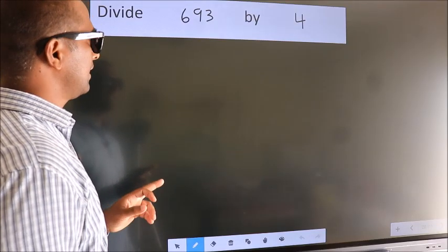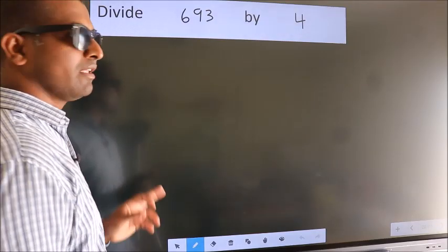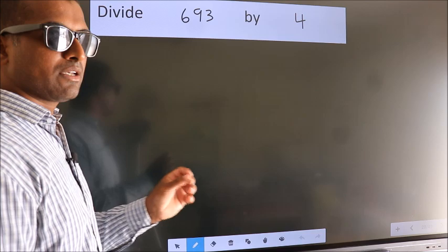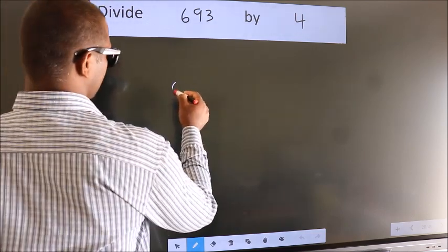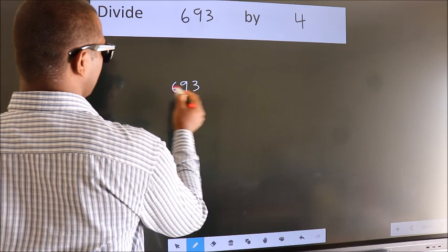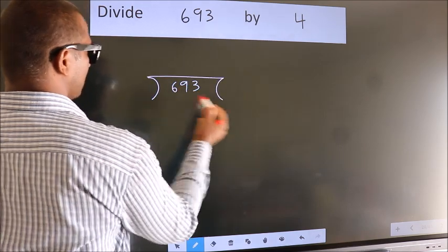Divide 693 by 4. To do this division, we should frame it in this way: 693 here, 4 here.